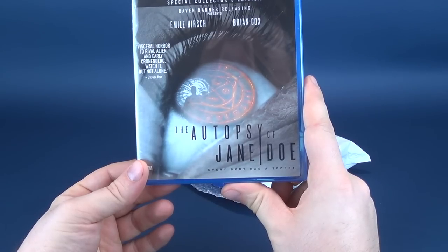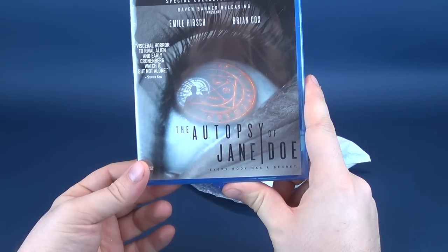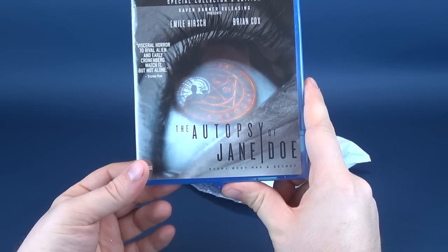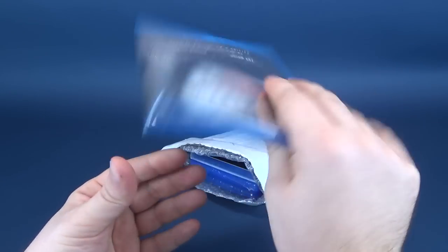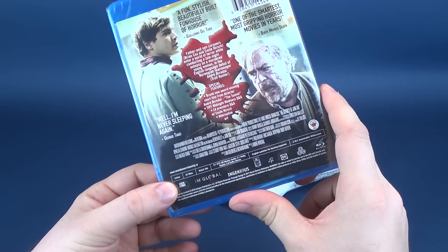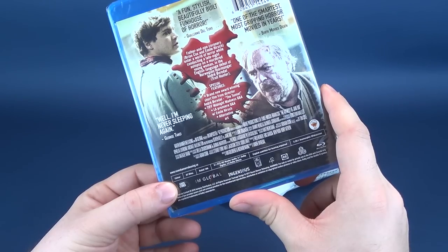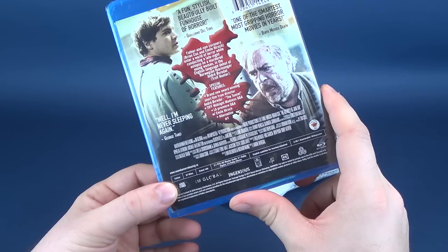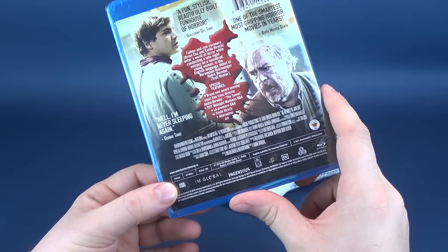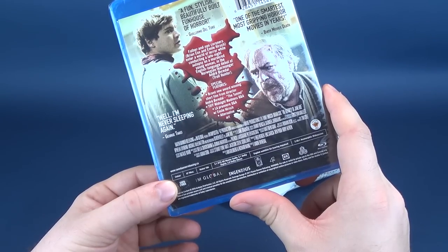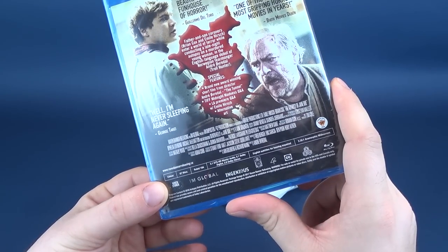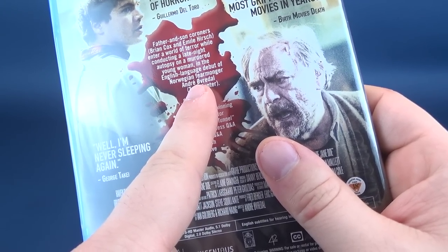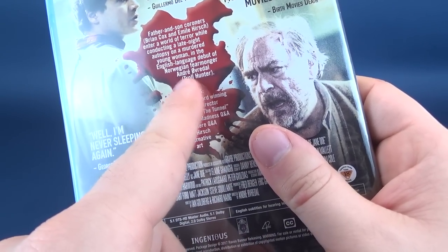Grabbing the first one off the top, this is The Autopsy of Jane Doe, Special Collectors Edition, starring Emile Hirsch and Brian Cox. I feel like this movie, did this movie come to the theater? Looking on the back, I don't think it did. Father and son coroners Brian Cox and Emile Hirsch enter a world of terror while conducting a late night autopsy on a murdered young woman. In the English language debut of Norwegian fear monger Andre Øvredal, I don't know how you would pronounce that. That is an O with a line through it. And in brackets it says Troll Hunter.